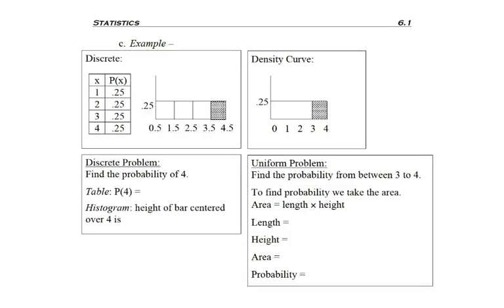So understanding that probability and area under a density curve are the same thing, let's go ahead and look at this example.